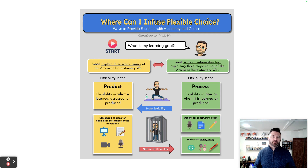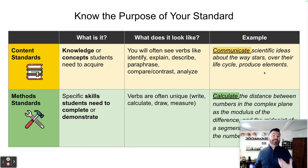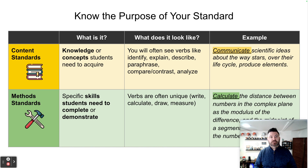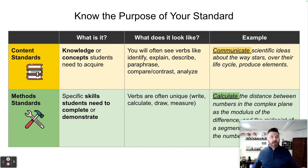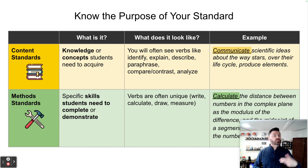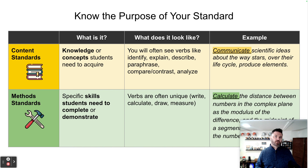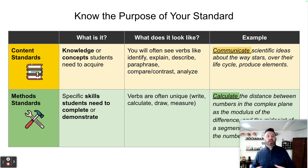Let's break this down. The first thing you'd want to do is get an idea of what your academic standard is all about. Academic standards are the compass that guide us in creating learning goals, lessons, and even assessments. Content standards measure some type of knowledge or concept — words like describe, paraphrase, or compare and contrast are often used. Method standards require students to demonstrate a specific skill or complete a task — you'll see words like measure, draw, write, or calculate.